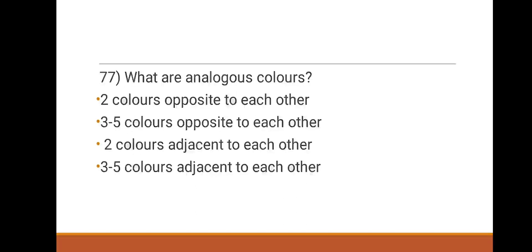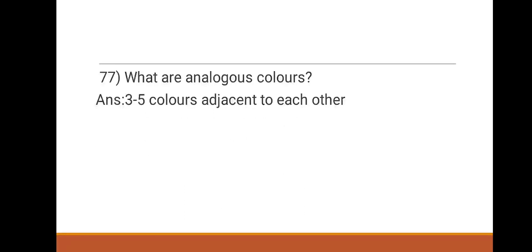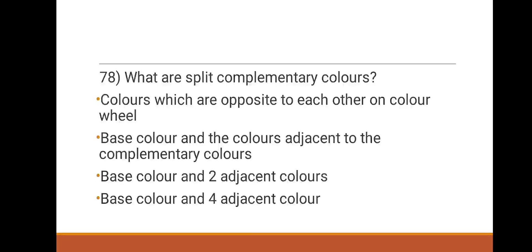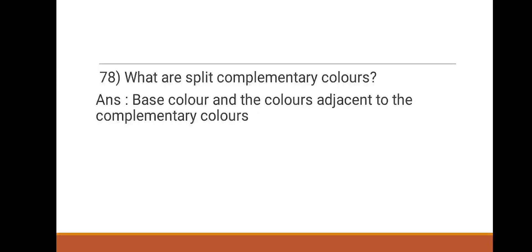Next question: what are analogous colors? Options: two colors opposite to each other, three to five colors opposite to each other, two colors adjacent to each other, three to five colors adjacent to each other. The right answer is three to five colors adjacent to each other. Next: what are split complementary colors? Options: colors opposite to each other on the color wheel, base color and the colors adjacent to the complementary colors, base color and two adjacent colors, base color and four adjacent colors. The right answer is base color and the colors adjacent to the complementary colors.